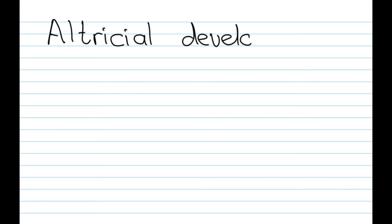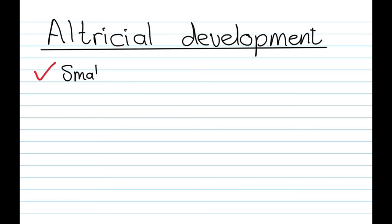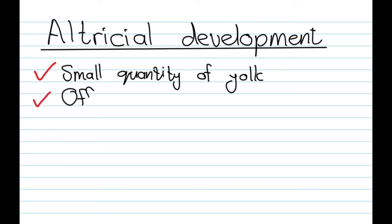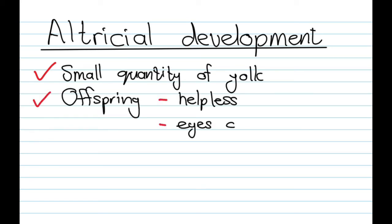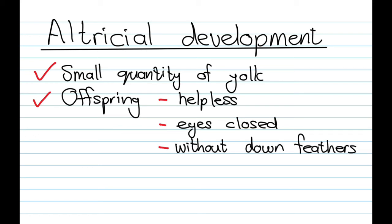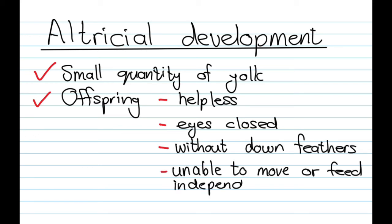When we look at altricial development, here we'll have a small quantity of yolk, and the offspring will then be helpless. Their eyes will be closed, there will not be any down feathers if they're birds, and they are unable to move or feed independently.